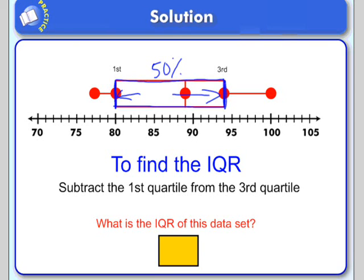So it's really easy to figure out. We take the third quartile, which is 94, and we subtract from that the first quartile, which is 80, so the interquartile range is 14. So the range of the middle 50% is 14.